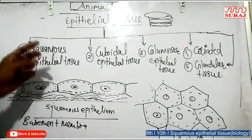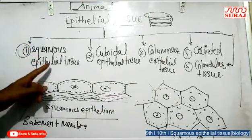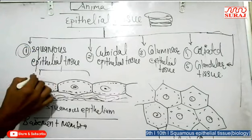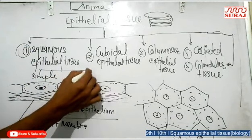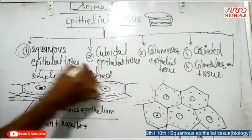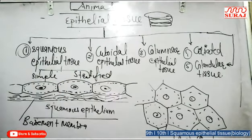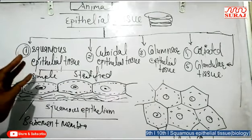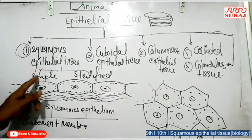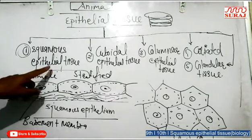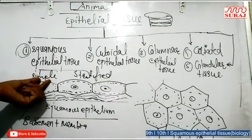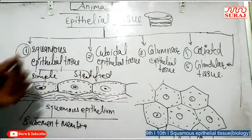Squamous epithelial tissue is of two types: simple squamous and stratified or multilayered. Simple squamous epithelial tissue has a single layer of closely packed cells and mainly lines the blood vessels, coelom, urinary tubules, and alveoli of the lungs. This tissue is mainly present in organs where absorption and secretion occur.